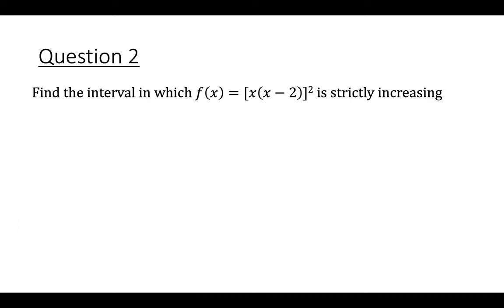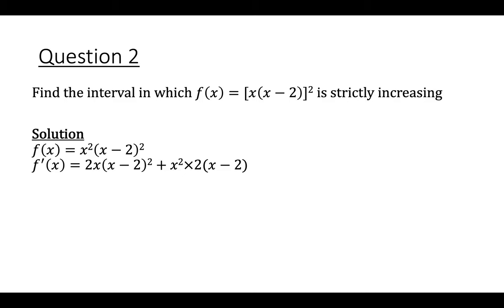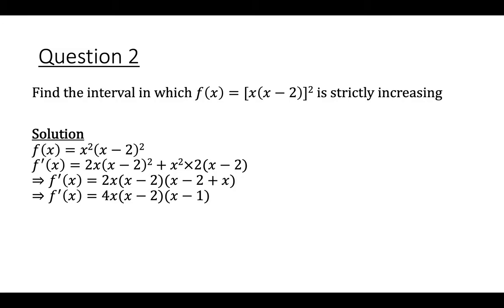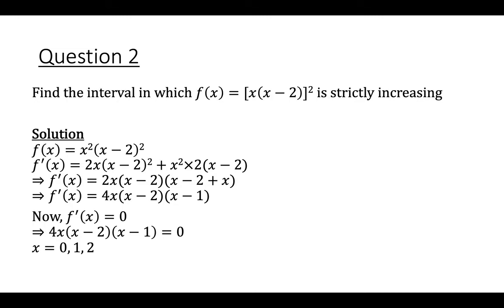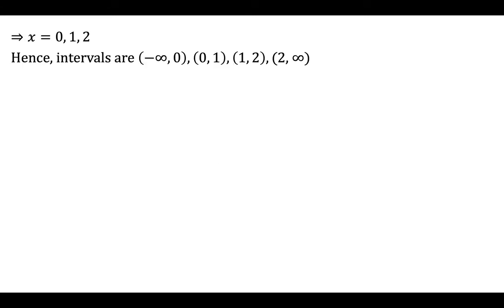Question number 2, find the interval in which f of x equal to x into x minus 2 whole square is strictly increasing. f dash x equal to 2x into x minus 2 whole square plus x squared into 2 into x minus 2. Simplifying, f dash x equal to 4x into x minus 1 into x minus 2. Putting f dash x equal to 0 gives x equal to 0, 1, 2, and the intervals are minus infinity to 0, 0 to 1, 1 to 2, and 2 to infinity.